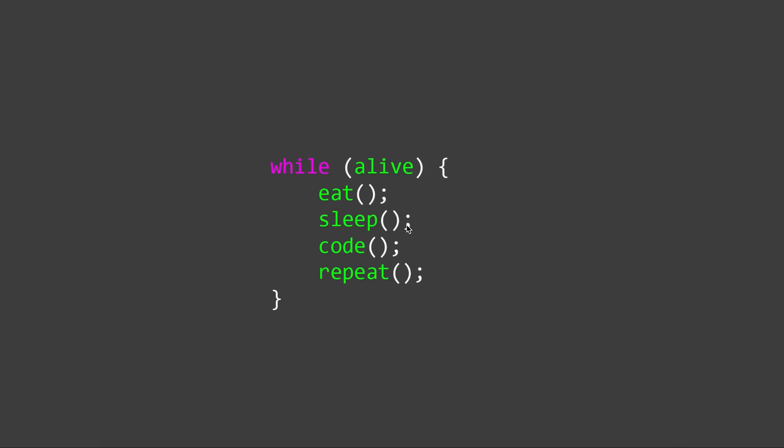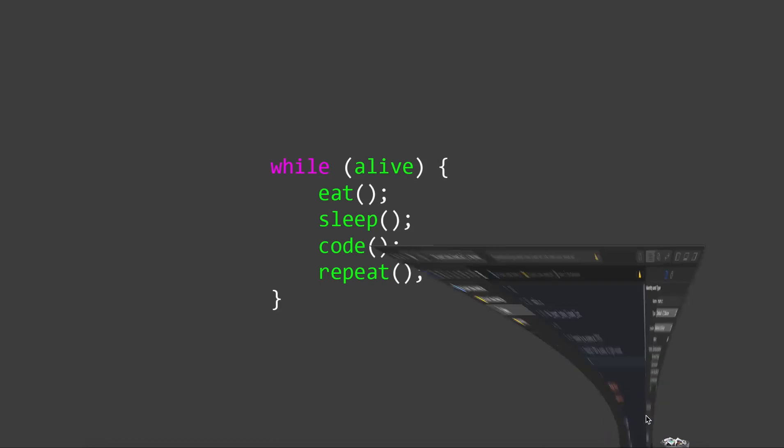Welcome to the MA Academy C data structures tutorial series. In this tutorial I will show you how to insert a node at a particular index. In the first tutorial I showed you how to make a basic linked list, in the second how to insert a node at the end, and in the third how to insert a node at the beginning. Now we'll cover inserting a node at a particular index.